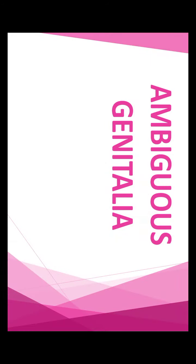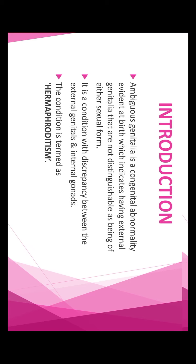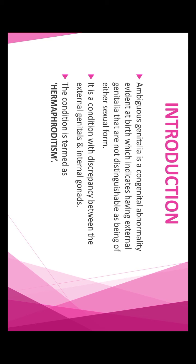Hello everyone, myself Garima. This session is for GNM second year and the topic is ambiguous genitalia. Ambiguous refers to being difficult to classify and genitalia refers to sexual organs. So ambiguous genitalia is a condition in which a child's external genitalia don't appear to be clearly either male or female. It is a congenital abnormality evident at birth which indicates having external genitalia that are not distinguishable as being of either sexual form. It is a condition with discrepancy between the external genitals and internal gonads, and the condition is termed as hermaphroditism.